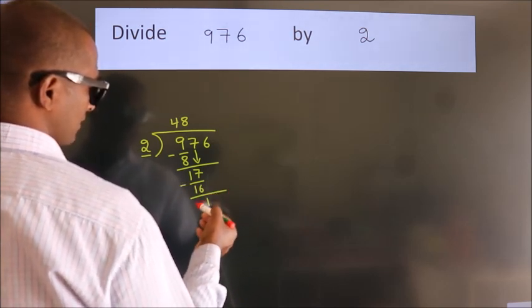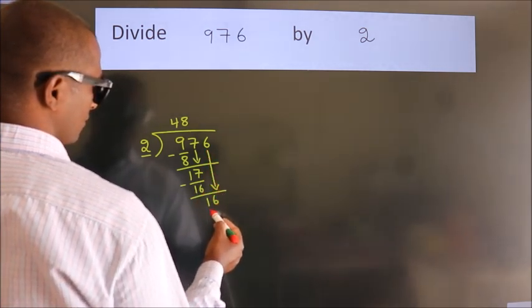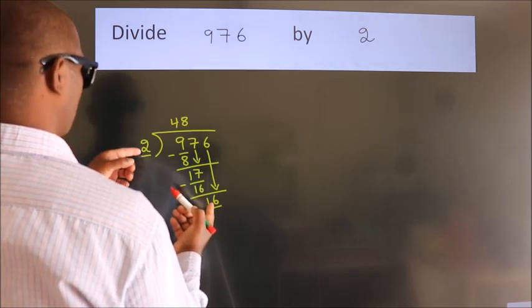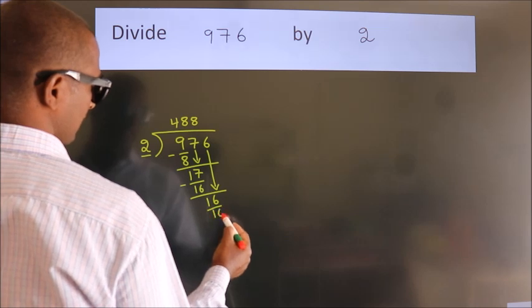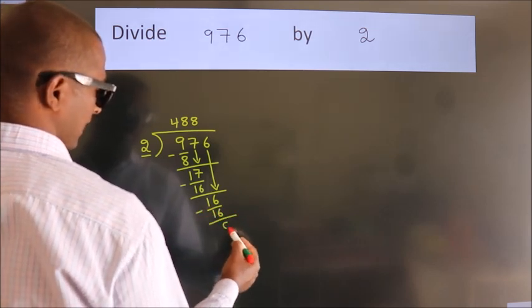After this, bring down the beside number. So 6 down, giving us 16. When do we get 16? In the 2 table, 2 eights is 16. Now we subtract. We get 0.